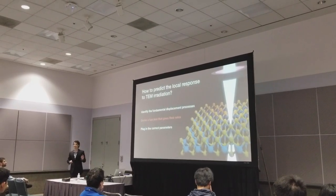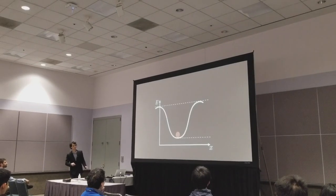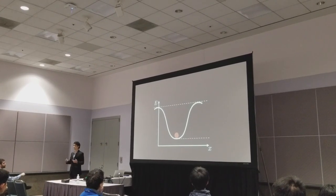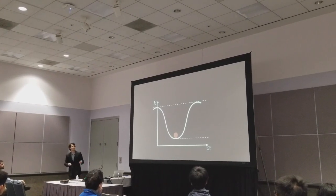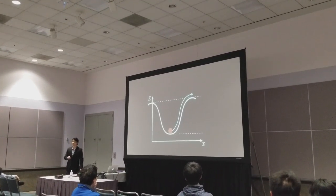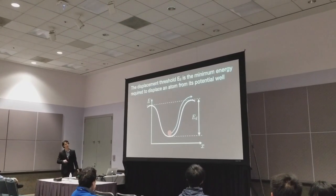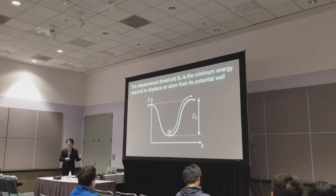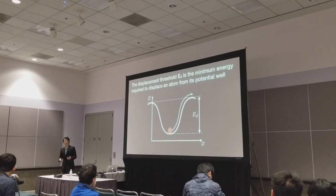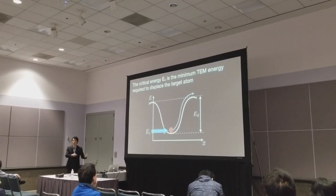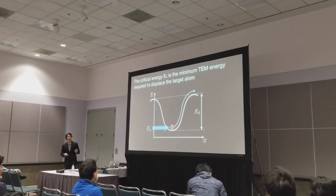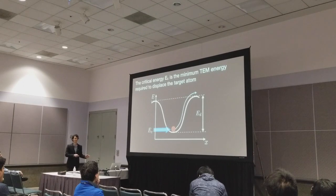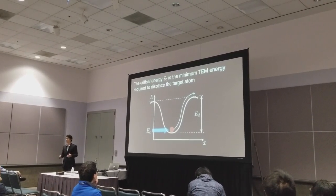Before I get into the math, there are a couple of definitions I need to lay out. Consider an atom at its pristine site, held in place by a potential barrier in every direction. Given enough kinetic energy, atoms can overcome those barriers, and I define the displacement threshold as the minimum energy for which that could occur. If that energy is imparted by the collision of an electron, there exists a minimum electron energy for which that displacement could happen — we call this the critical energy. The critical energy belongs to the electron, while the displacement threshold corresponds to the energy of the atom.